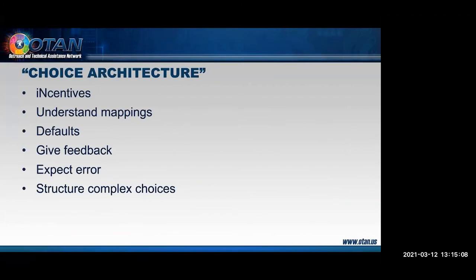One of the central ideas in Nudge is what the authors call choice architecture. Choice architecture has six components that provide a framework for adult educator communication that encourages students to make good choices and not be deterred in reaching their goals. Here are the six nudge components for choice architects — or in this case adult educators — to consider: incentives, understand mappings, defaults, give feedback, expect error, and structure complex choices. So let's look at each one.